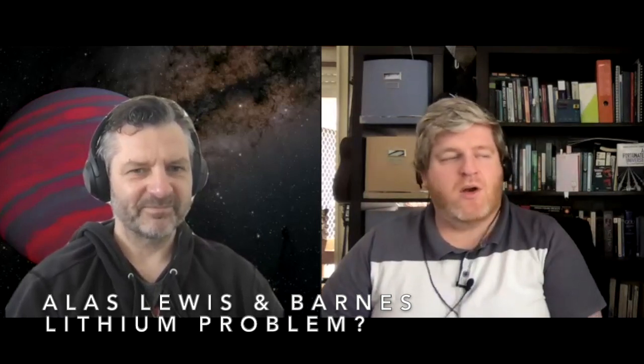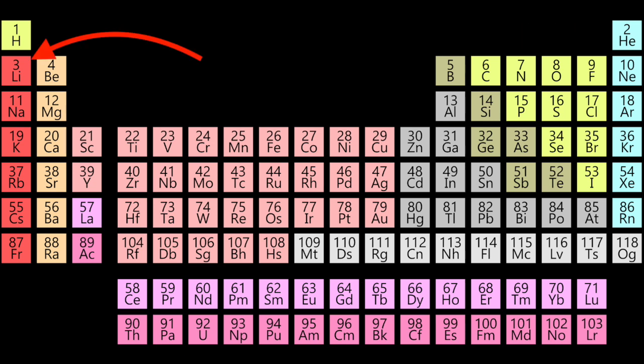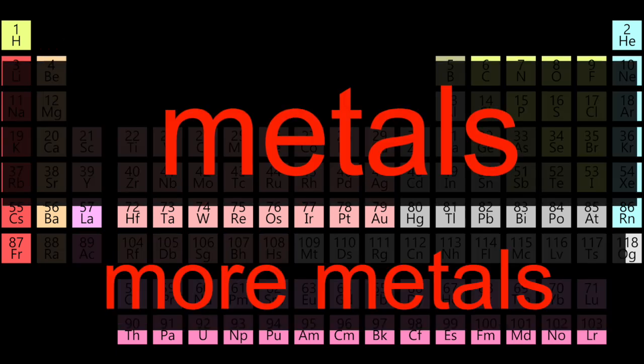Lithium is the third element in the periodic table. It goes hydrogen with one proton in the nucleus, helium with two protons, and then lithium has three. After that, most astronomers don't really care what comes next.